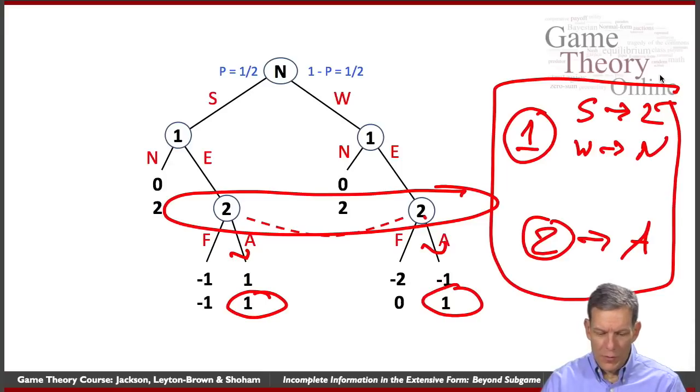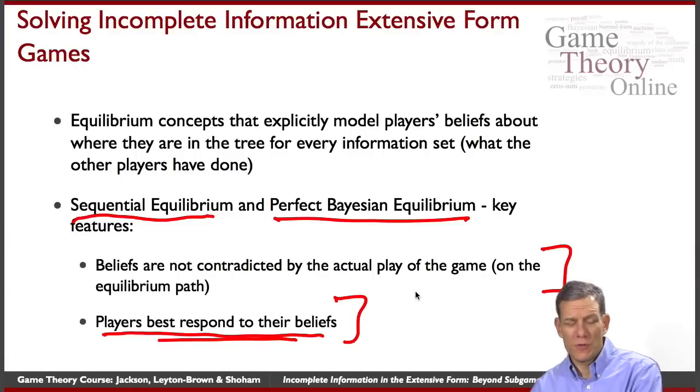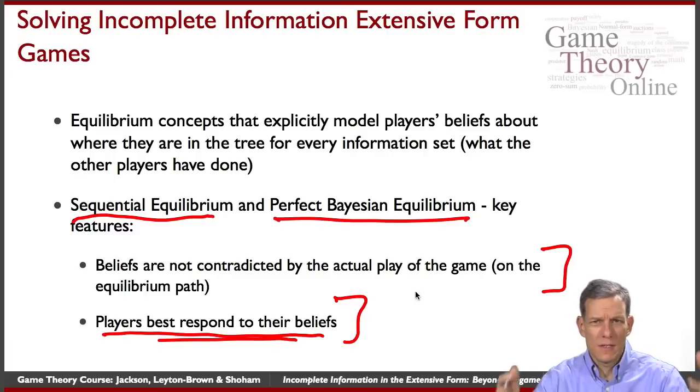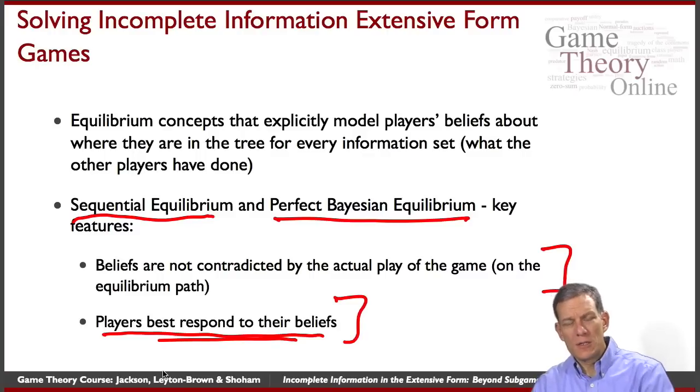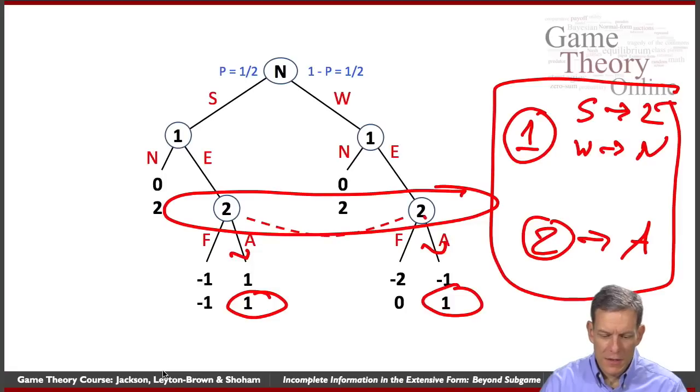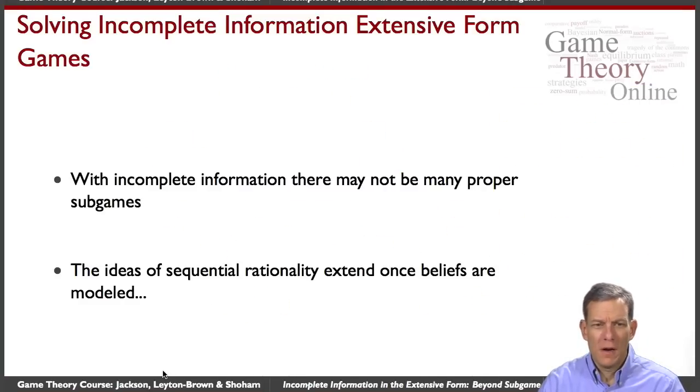So the idea here is we have these extra impositions that players have beliefs. First of all, they're not contradicted. So it has to be that what they're believing is consistent with the way that other players are playing. And players should best respond to their beliefs, which is imposing credibility at every information set in the game. So this ends up making a lot of predictions in these kinds of games. And the challenges here we see with incomplete information, there may not be proper subgames. The ideas of sequential rationality can be extended, but they require extra layers of solution concepts. And once we do this, we're also layering on a lot more than we had before. And we've seen subgame perfection already can be quite demanding of players. Here now they also have to be very good at inferring things based on where they are.